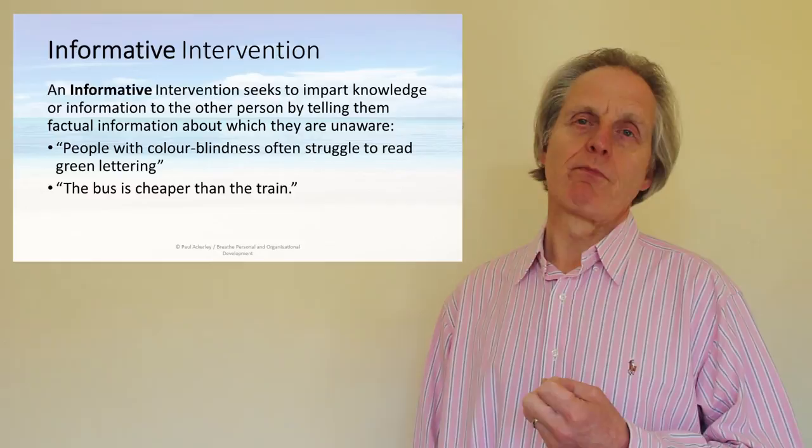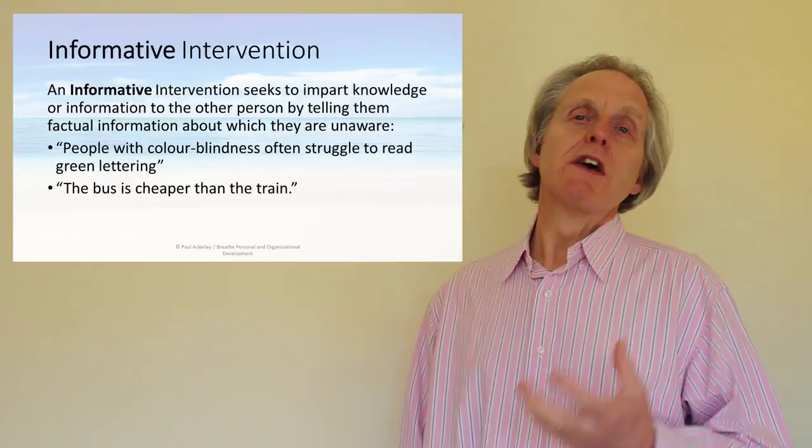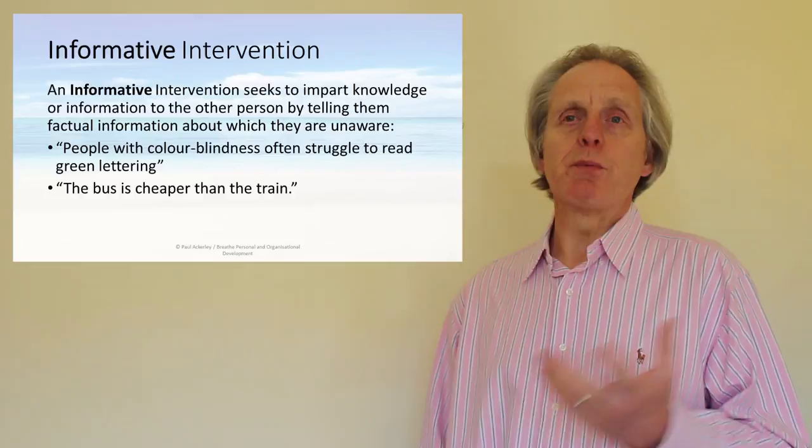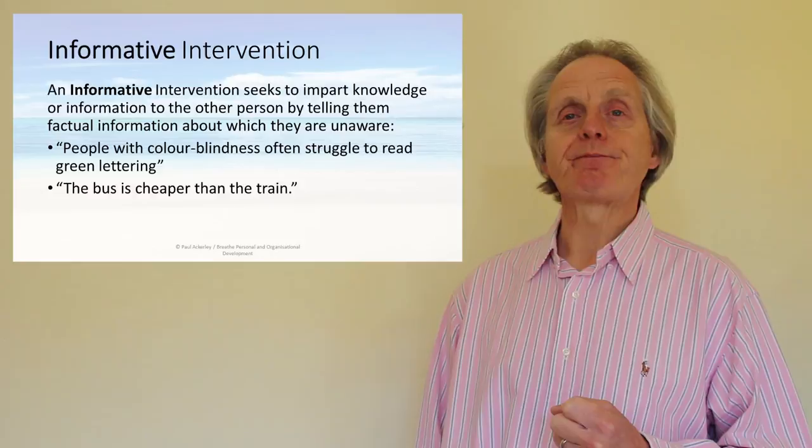The second intervention is informative — slightly less directive than prescriptive. It's not telling someone to do something; it's imparting knowledge so that person can then make their own decision. For example: 'People with colorblindness often struggle to read green lettering' — then the person can decide whether they wish to change the lettering or not. Or: 'The bus is cheaper than the train.' Those are examples of an informative intervention.